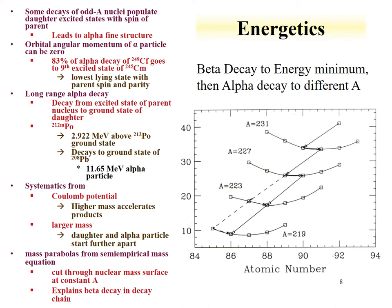Polonium-212m sits about 3 MeV above the polonium-212 ground state and decays to lead-208 directly with an alpha particle of about 11.5 MeV. The magic nuclear properties of lead-208 can help drive that decay from the metastable state all the way to the ground state of the daughter.